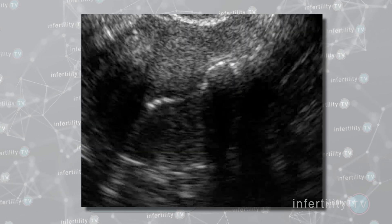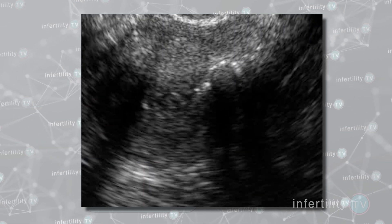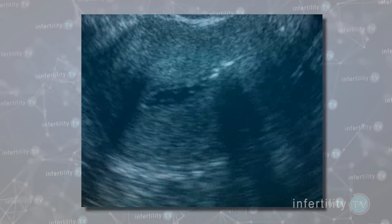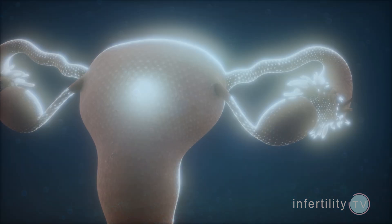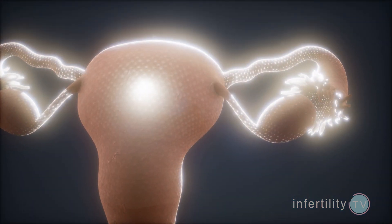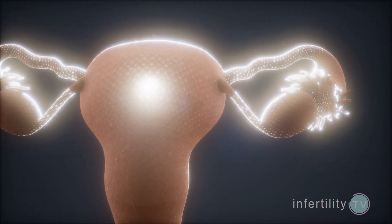Instead of contrast, the fluid is saline, and instead of doing an x-ray, the doctor uses ultrasound. By adding air bubbles to the saline, some doctors try to also evaluate the fallopian tubes, but an HSG is not a great way to look for tubal blockage. If you need to know about the tubes, HSG is a much better choice.